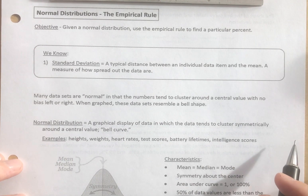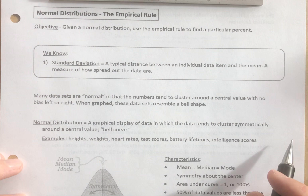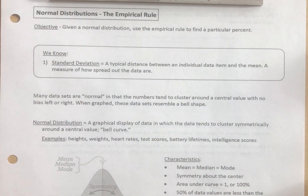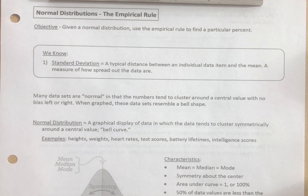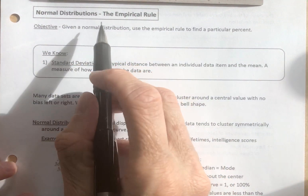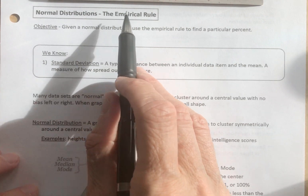As we've discussed statistics thus far, we've gotten into some of the basics with mean, median, and mode, and then we spoke a little bit about standard deviation. Now we're going to turn our attention to normal distributions. So much of our data is normally distributed that it is important to recognize what that means and what that tells us. In particular, we're going to discuss normal distributions and what's called the empirical rule.